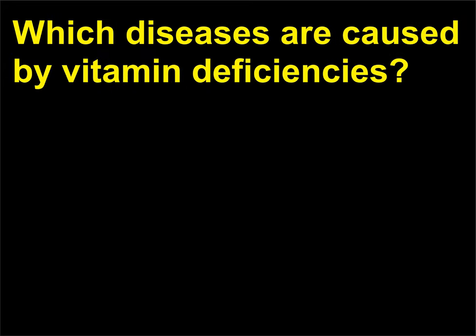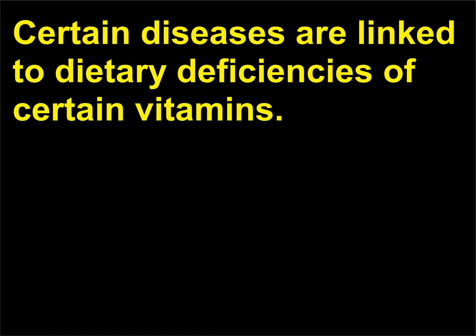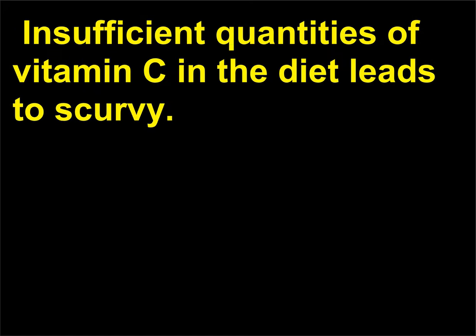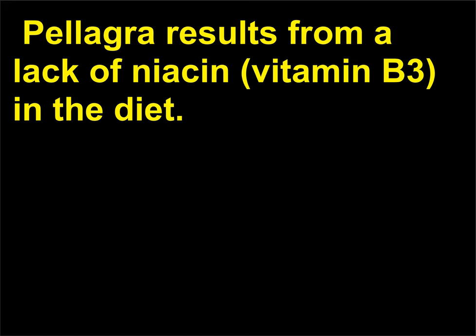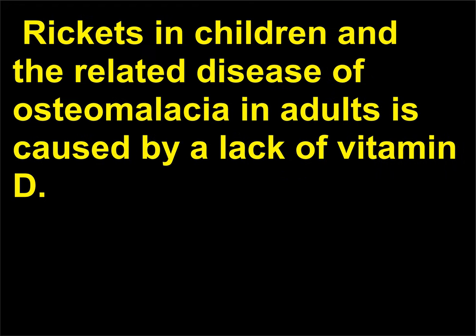Which diseases are caused by vitamin deficiencies? Certain diseases are linked to dietary deficiencies of certain vitamins. Insufficient quantities of vitamin C in the diet leads to scurvy. Pellagra results from a lack of niacin (vitamin B3) in the diet. Rickets in children and the related disease of osteomalacia in adults is caused by a lack of vitamin D.